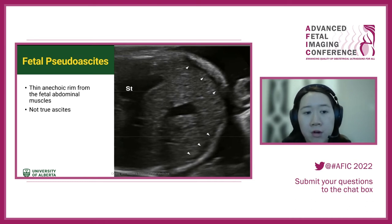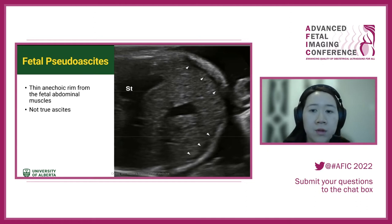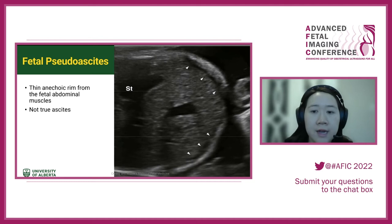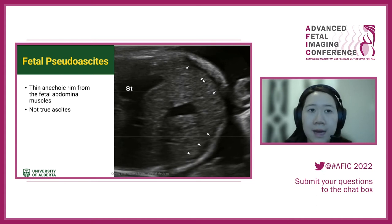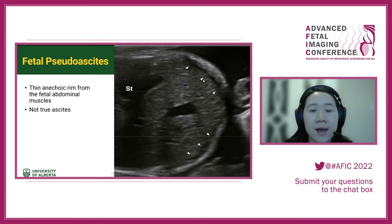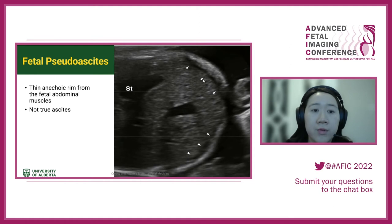The other thing to keep in mind is pseudoascites — this is where we can sometimes overcall or be fooled by the normal hypoechoic layer along the fetal abdominal wall. This is not true ascites. When calling ascites, make sure you're looking at several different angles of the fetus to ensure you're not overcalling.